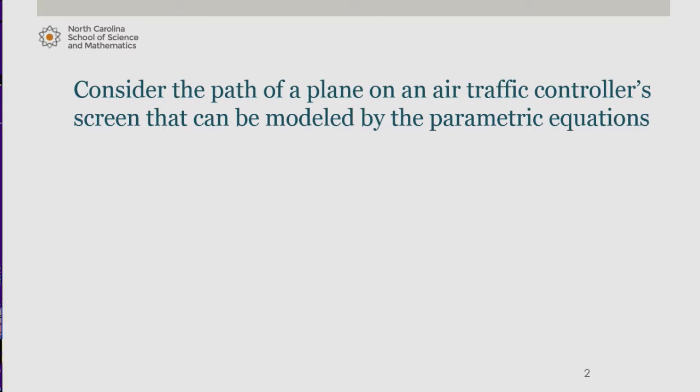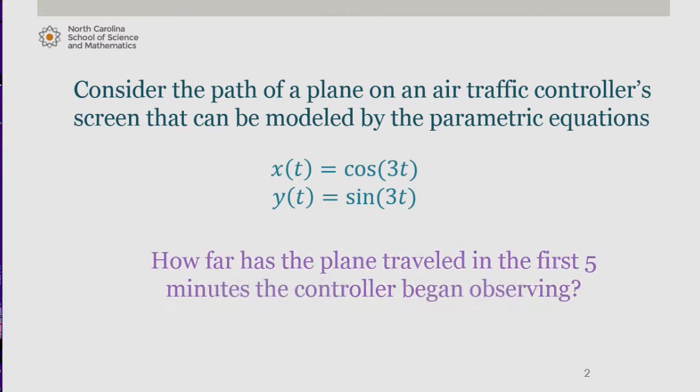Consider the path of a plane on an air traffic controller's screen that can be modeled by the parametric equations x of t being cosine of 3t and y of t being sine of 3t, where t is in minutes since the air traffic controller started observing. Suppose the air traffic controller wanted to know how far the plane has traveled in the first 5 minutes they began observing.